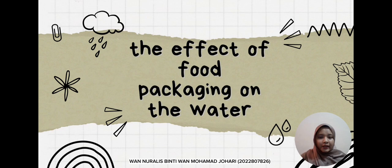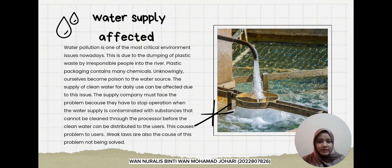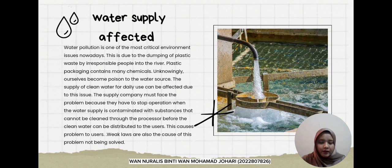Hi and Assalamualaikum. My name is Juan Nuralis, and I will present the effect of food packaging on water. Water pollution is one of the most critical environmental issues today. This is due to the dumping of plastic waste by irresponsible people into rivers. Plastic packaging contains many chemicals, and these chemicals become a poison to water sources. The supply of clean water for daily use can be affected, and supply companies must face costly problems when water is contaminated with substances that cannot be cleaned through standard processes.